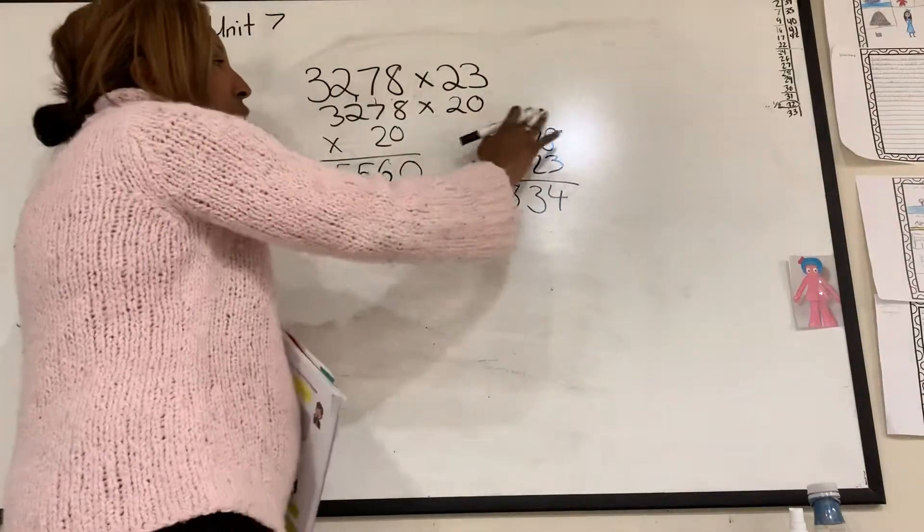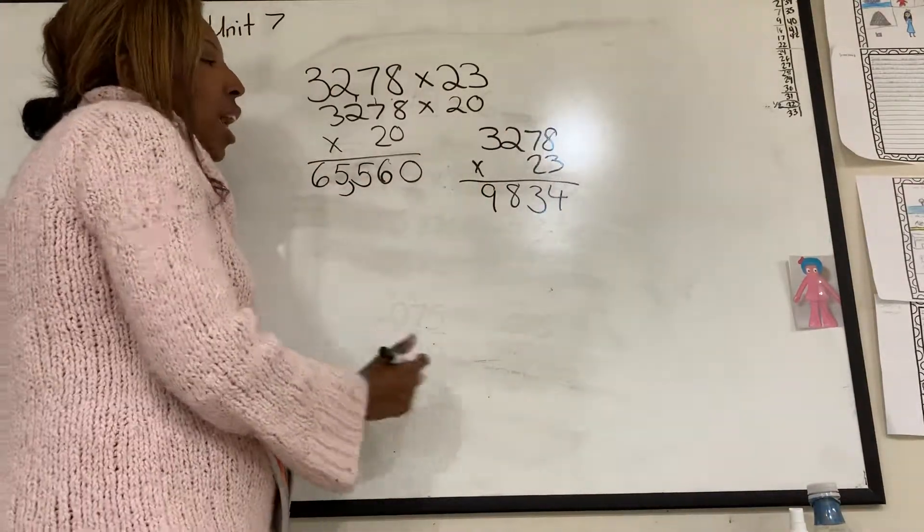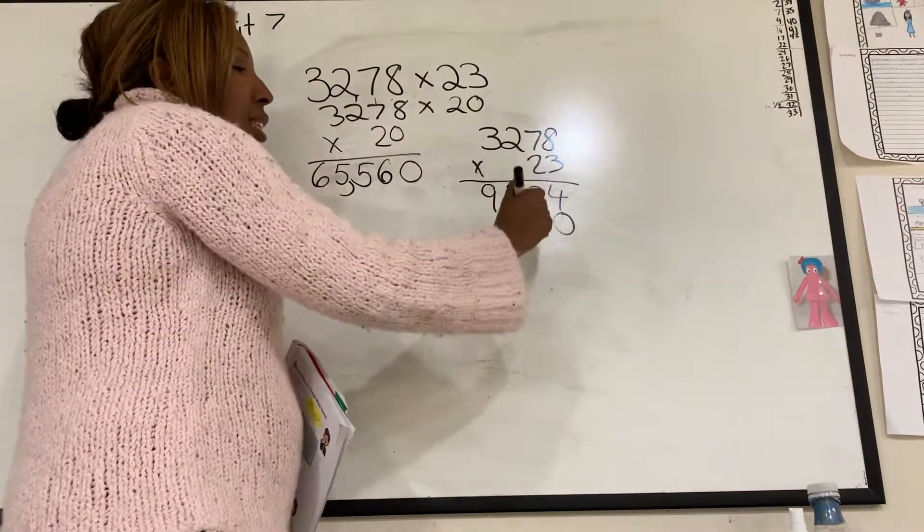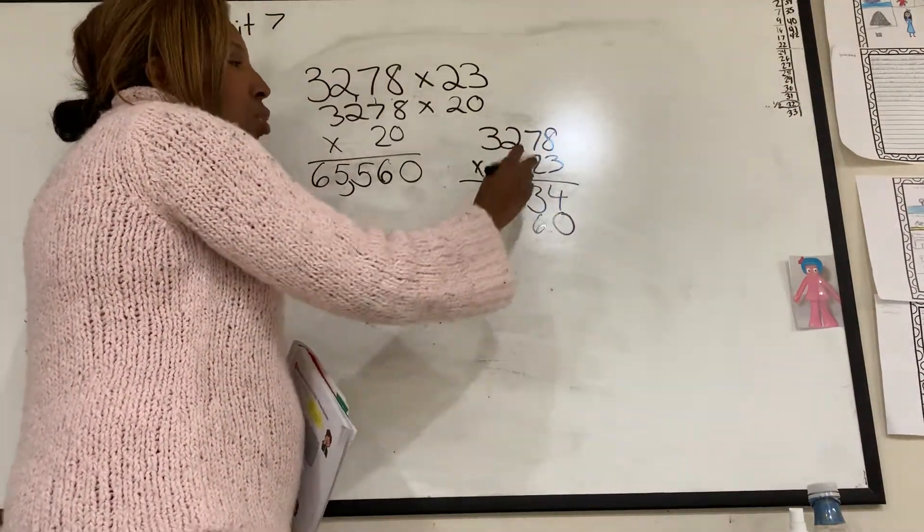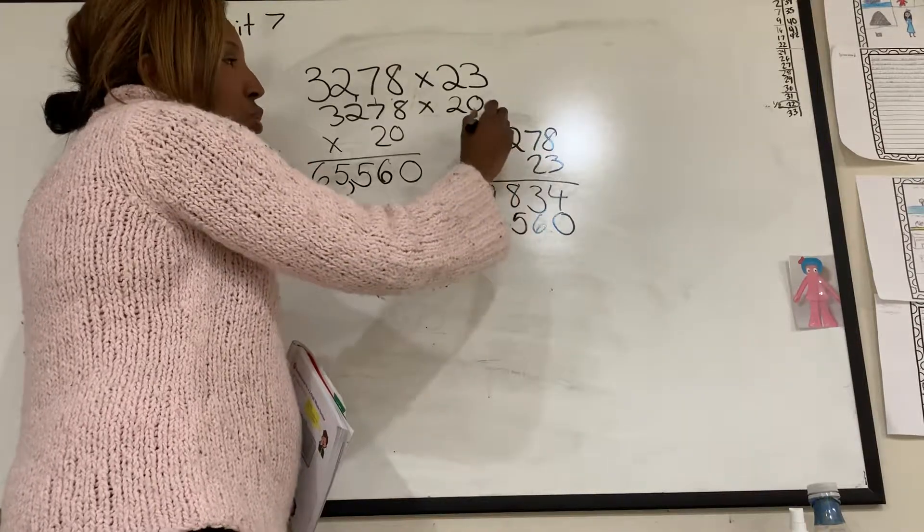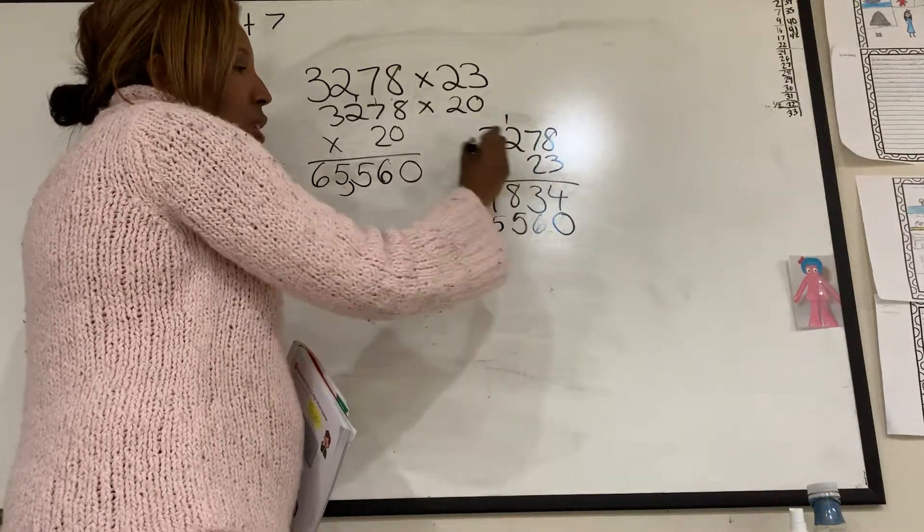All right, now I've done that. I'm going to erase the numbers on the top so I don't get confused. I'm going to put my 0. And I'm going to go to my next line. 2 times 8 is 16, carry the 1. 2 times 7 is 14, plus 1 is 15, 5, carry the 1. 2 times 2 is 4, plus 1 is 5. And 2 times 3 is 6.